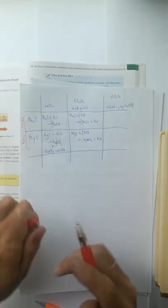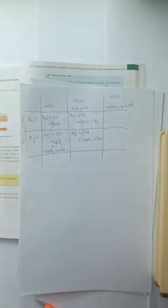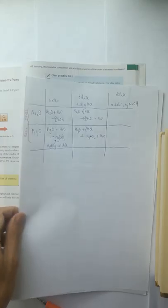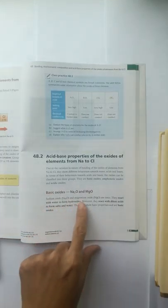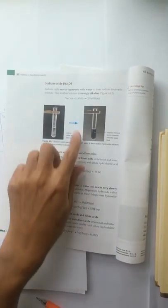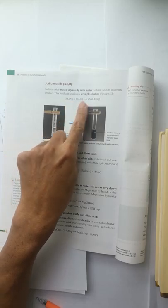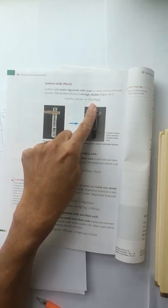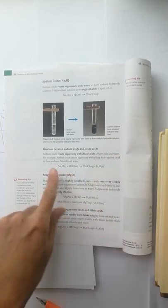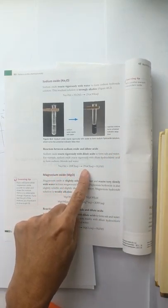These oxides react with acid readily. They are basic oxides. Sodium oxide dissolved in water forms an alkaline solution, turning the indicator to blue, or reacts with acid to form salts and water.